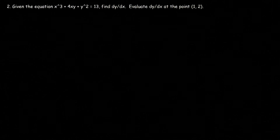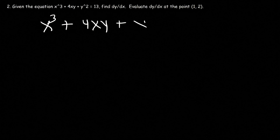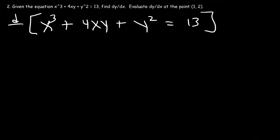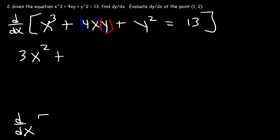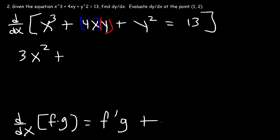Now let's move on to number 2. Given the equation x cubed plus 4xy plus y squared is equal to 13, find dy/dx. Let's differentiate everything with respect to x. The derivative of x cubed is 3x squared. Now for the derivative of 4xy, we need to use the product rule. Let's treat 4x as f and y as g. The derivative of f times g is f prime times g, plus f times g prime. So the derivative of 4x is 4, times the second part y.